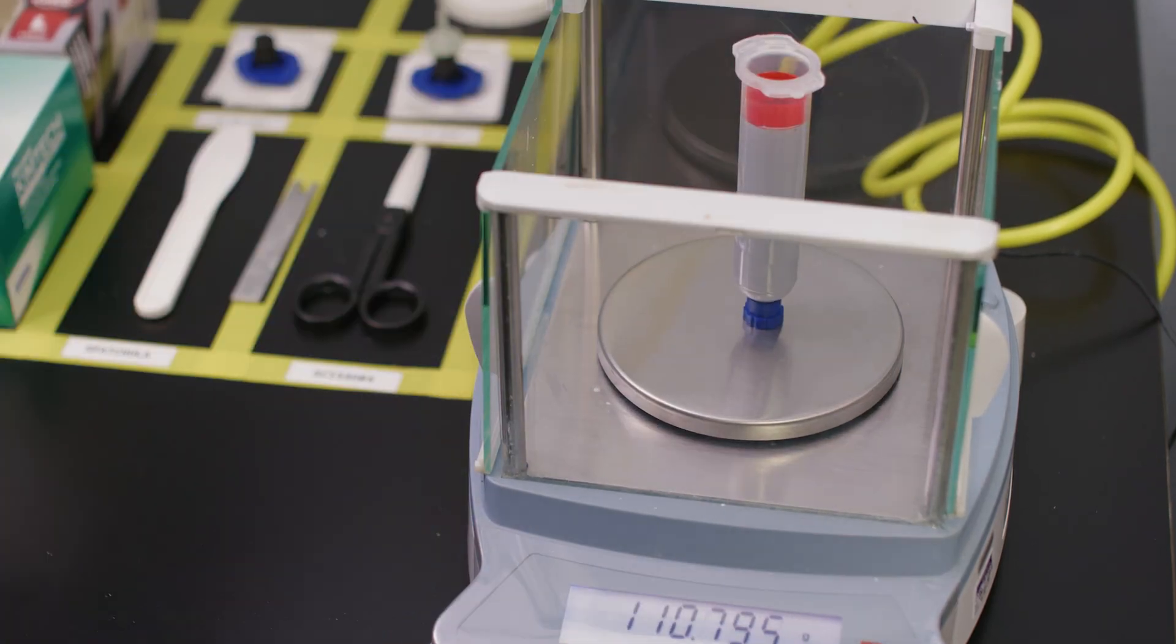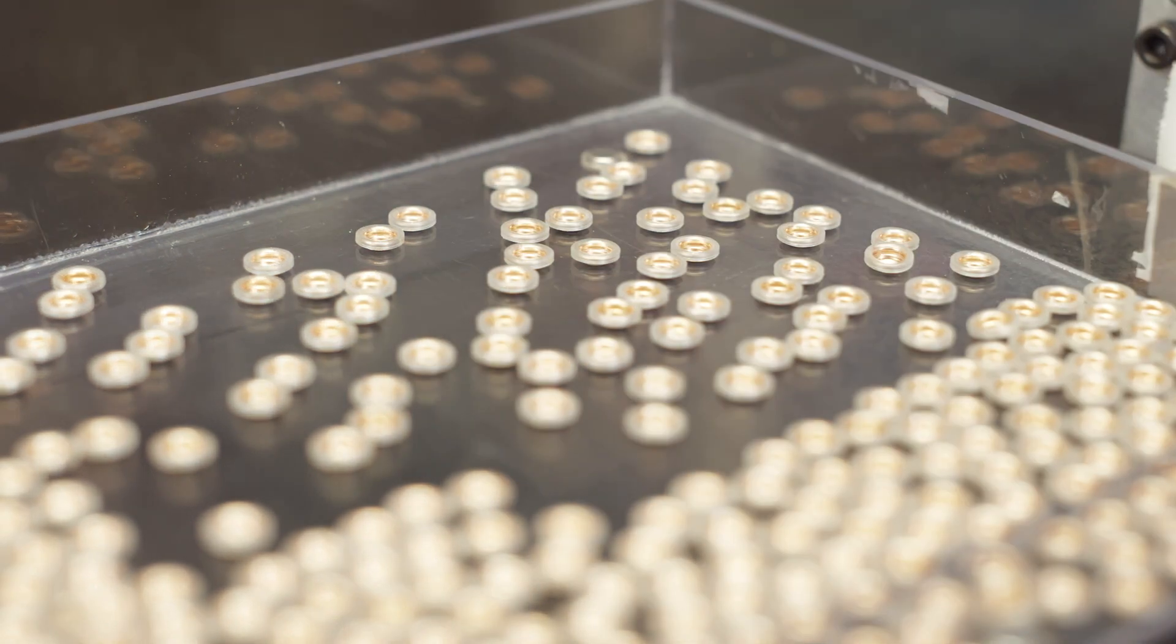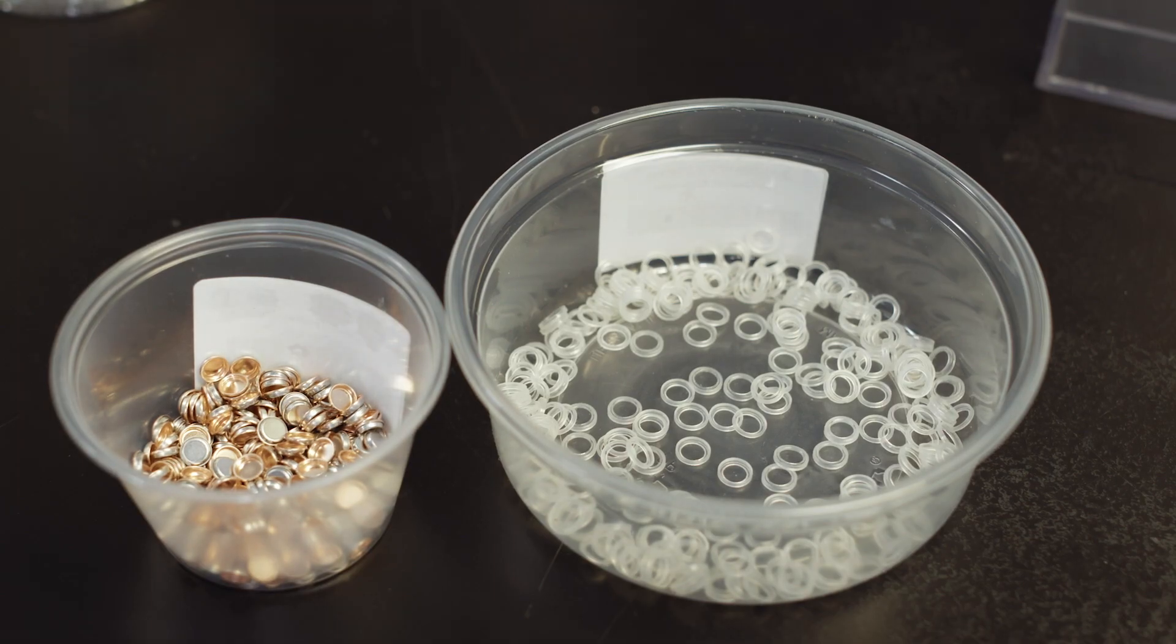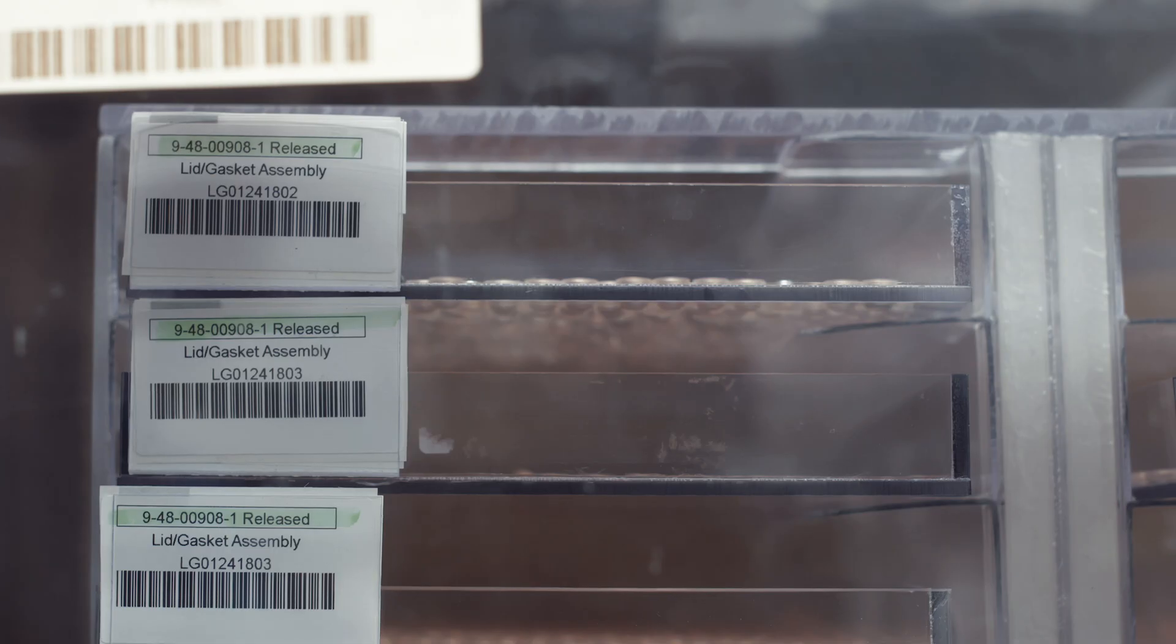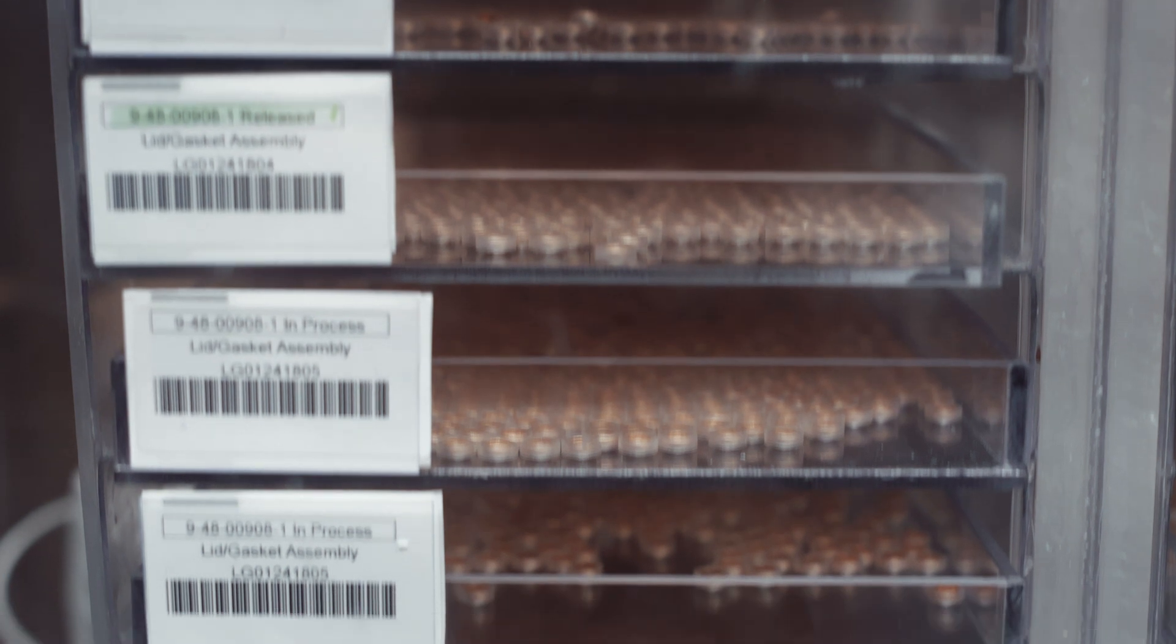The lid gasket assembly is assembled by joining a stamped lid made from proprietary material and a micro-molded gasket. The lid gasket assemblies are then held in humidity controlled environments at a prescribed level for a minimum 24 hours and are then released to the production line.